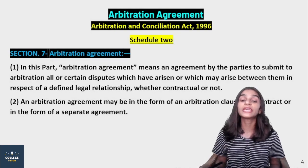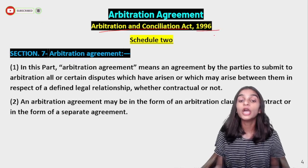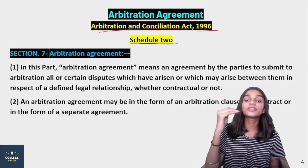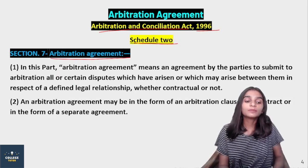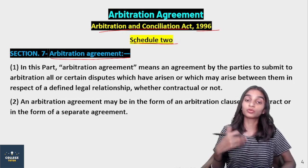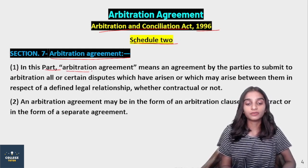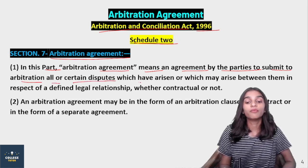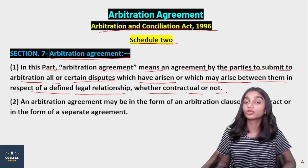Let's move ahead and learn about the Arbitration Agreement. The Arbitration Agreement is given in the Arbitration and Conciliation Act 1996. In Schedule 2, you will find Sections 7, 8, and 9, which are related to the Arbitration Agreement. Section 7 basically tells us what an Arbitration Agreement is. Let's read the bare provision of the Act. Sub-section 1 says: 'arbitration agreement means an agreement by the parties to submit to arbitration all or certain disputes which have arisen or which may arise between them in respect of a defined legal relationship, whether contractual or not.'